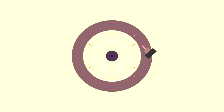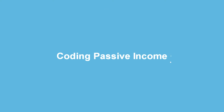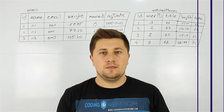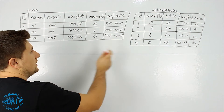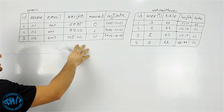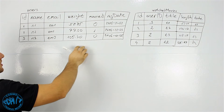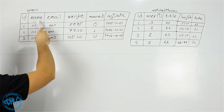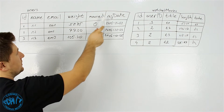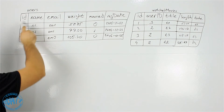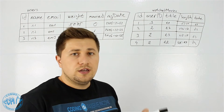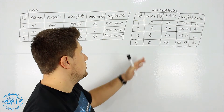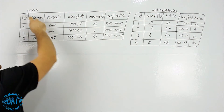Let's do it. Let's imagine that in our database we have two tables: users and watched_movies. For the users table, there is nothing special — it contains information about each user, so each of them has a name, email, likes, marital status, registration date, and a unique ID.